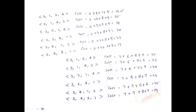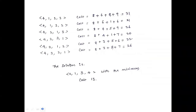We also check the fourth possibility, where we assign the fourth job to the first person and then change all remaining persons' jobs with different combinations, finding the cost of each possibility.